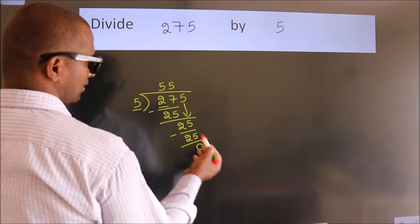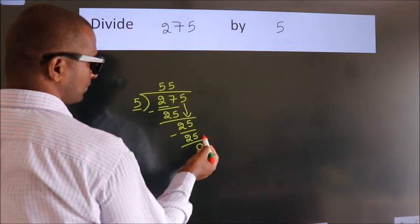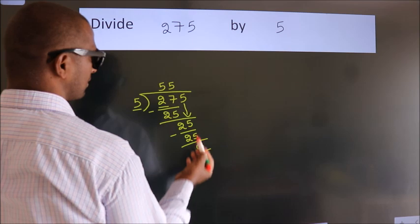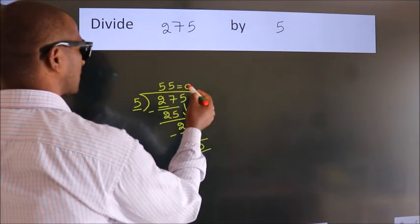After this, there are no more numbers to bring down, and we got remainder 0. So this is our quotient.